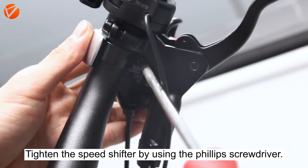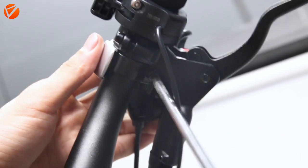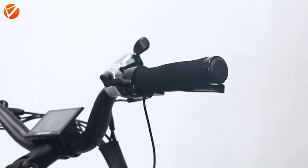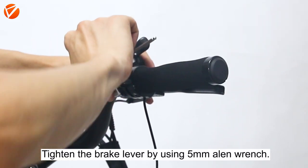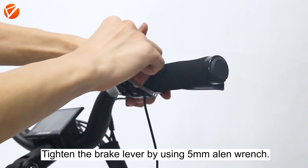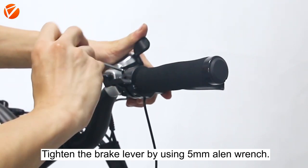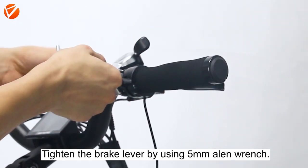Tighten the speed shifter by using the Phillips screwdriver. Tighten the brake lever by using a 5mm Allen wrench.